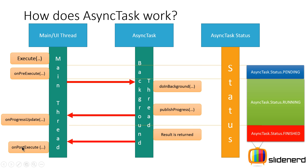Once the result is calculated, onPostExecute is called on the main thread, where you can work with the result — for example, hiding the progress bar or dialog and doing other cleanup after your task is completed. At this point, the AsyncTask status is finished.